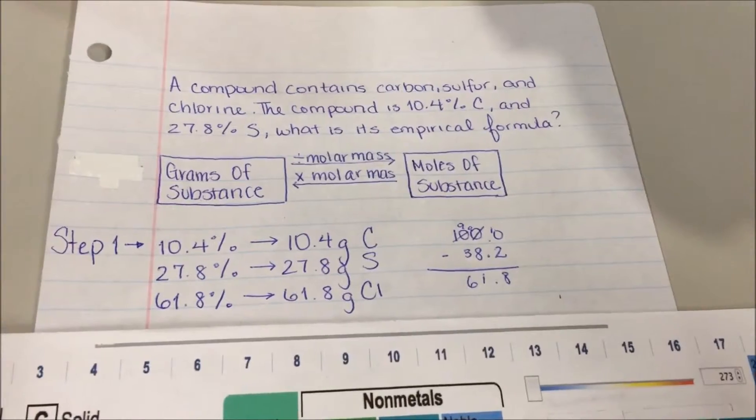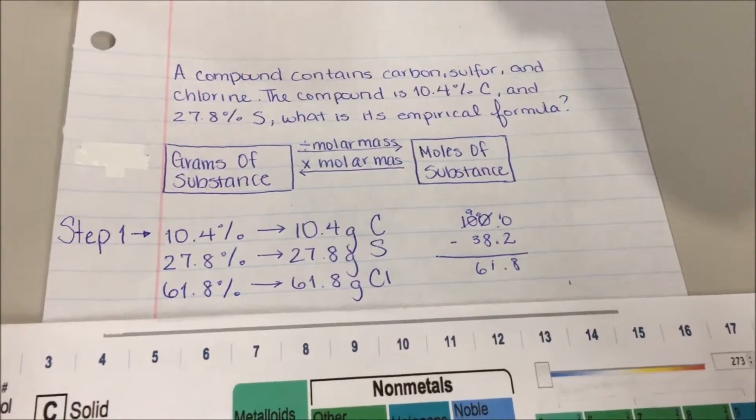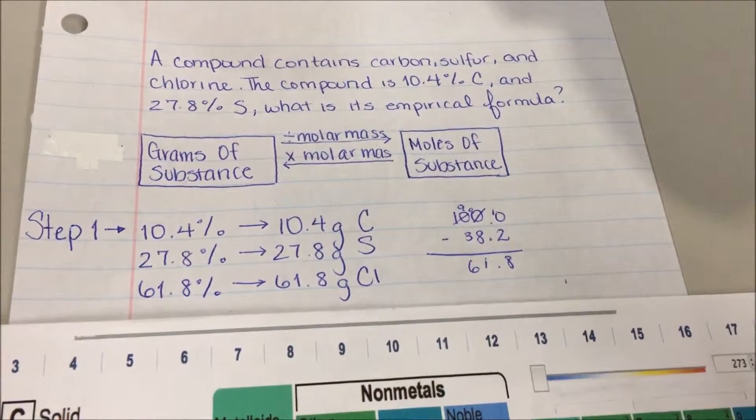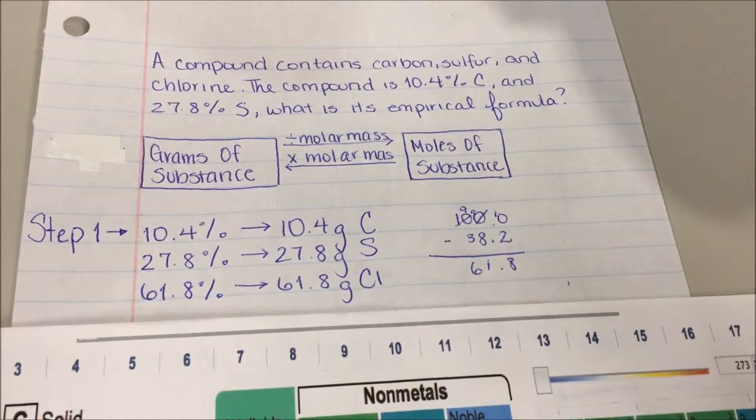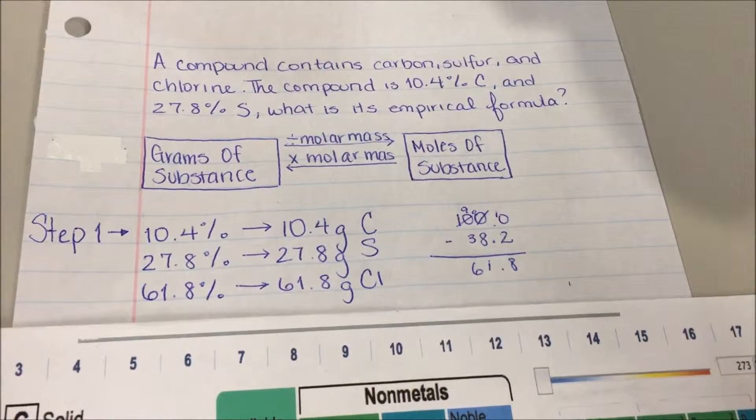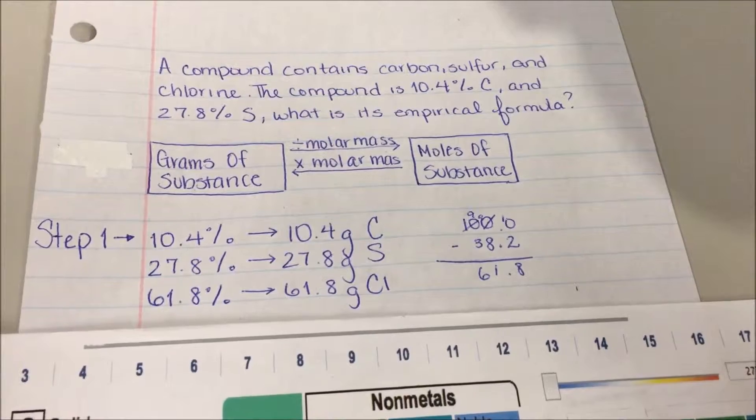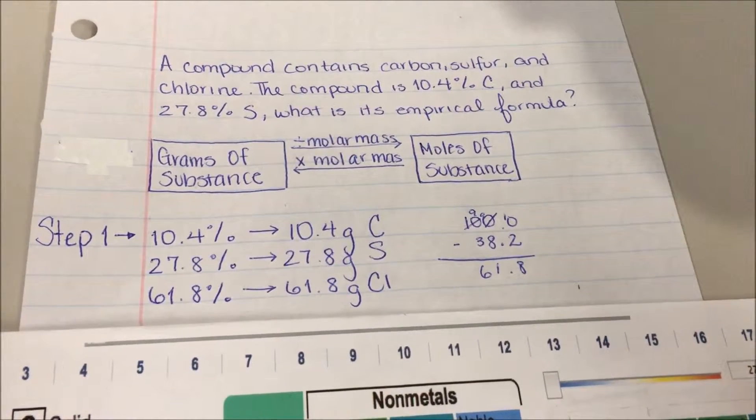Since we know the percent is out of 100, we can just change the percent sign to grams. To find out the grams of chlorine, we would have to subtract 38.2 from 100 to get 61.8.